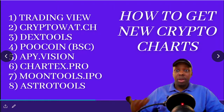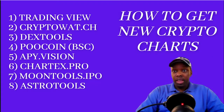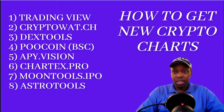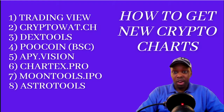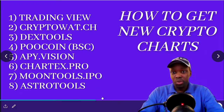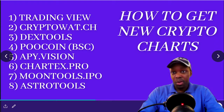There are about five to six main websites I use for charts, but most cases can be solved between two: DexTools and PooCoin. PooCoin is a funny name - the reason they call it that is because most of the coins you're looking for on there are not that great. Here's the full list: TradingView, CryptoWatch, DexTools, PooCoin for Binance Smart Chain, APY Vision, ChartX Pro, Moon Tools, and Astro Tools.